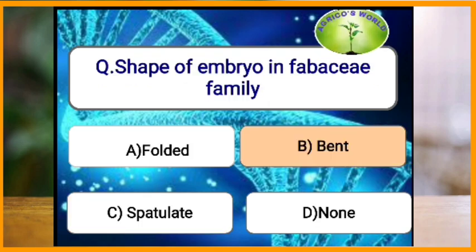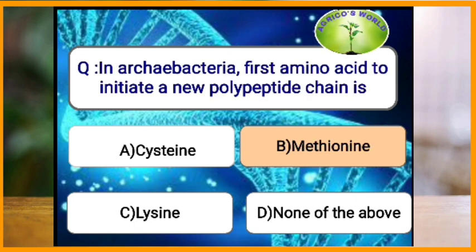What is the shape of the embryo in the Fabaceae family? Usually the members of the Fabaceae have the bent type of embryo. In Archaea, what is the first amino acid to initiate a new polypeptide chain?